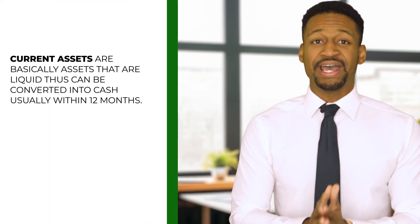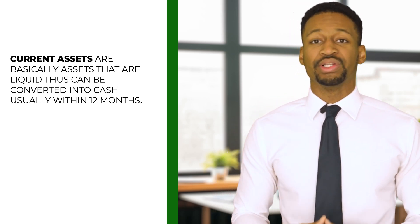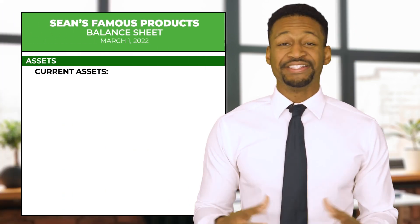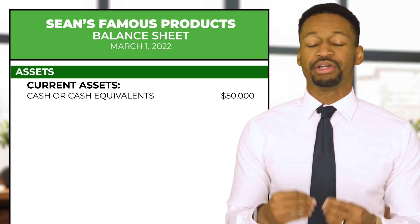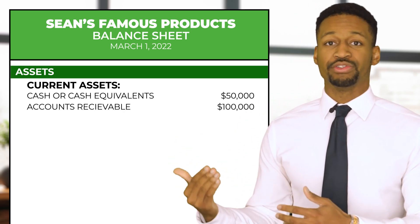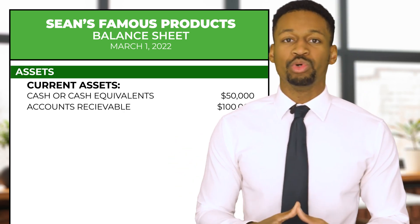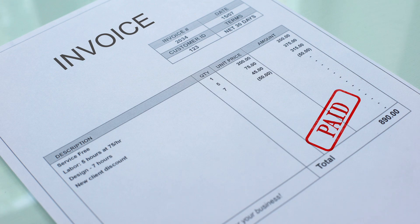Current assets are assets that can be liquidated and converted into cash within 12 months. In our example, we have current assets of $50,000 in cash or cash equivalents, and accounts receivable of $100,000. Accounts receivable is money you expect in the near future — for example, if you've delivered a service and sent an invoice waiting to be paid, that's an account receivable because you can likely convert it into cash within 12 months.